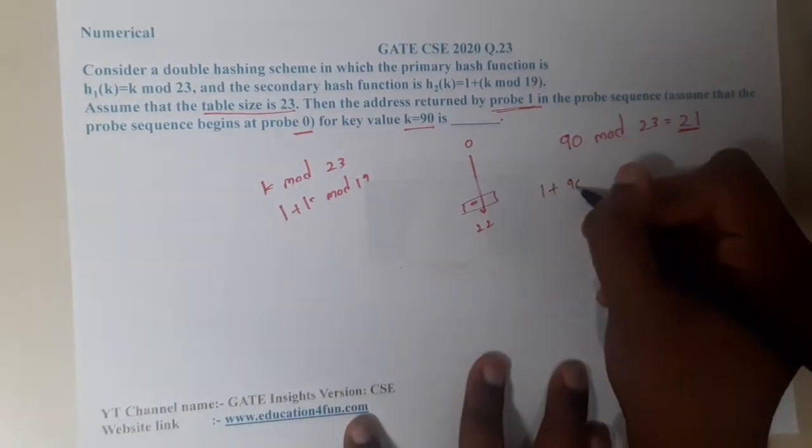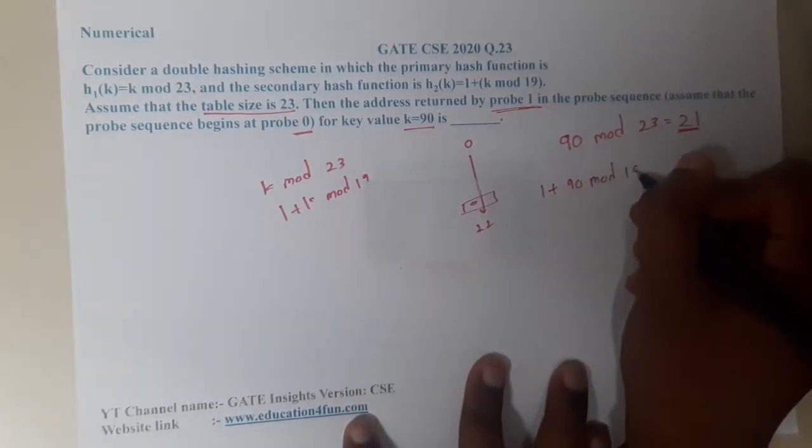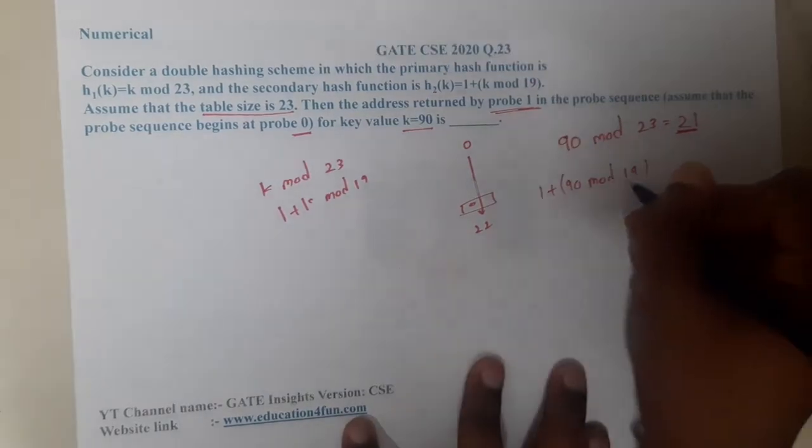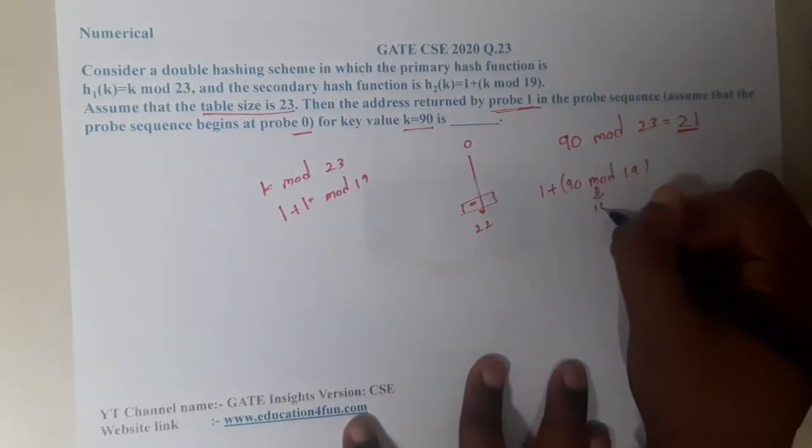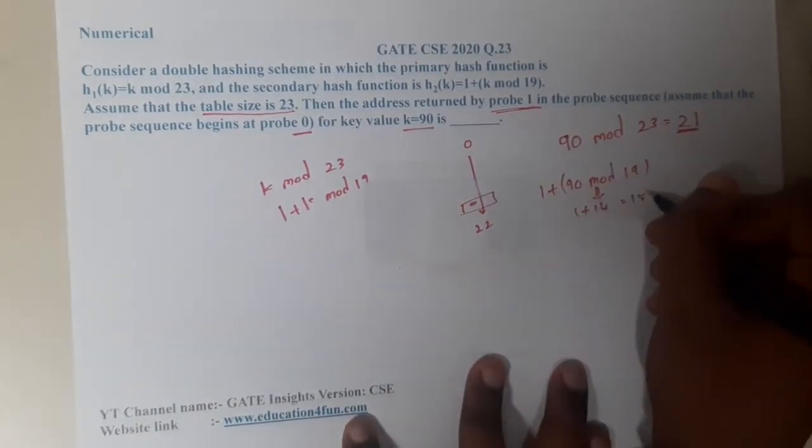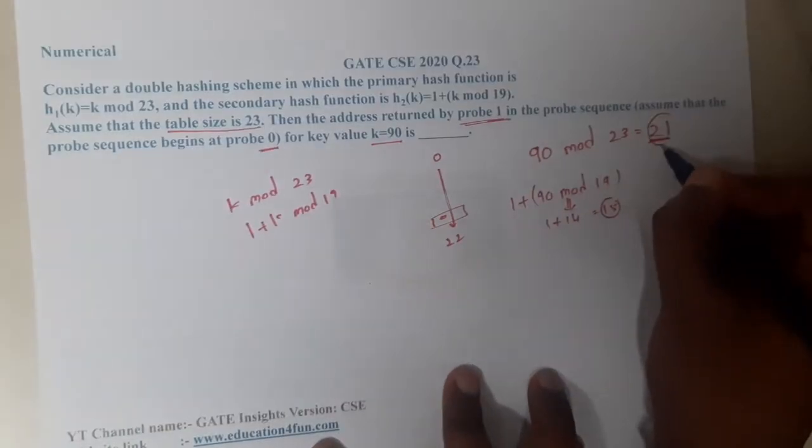What is the next equation? That is nothing but 1 + 90 mod 19. For this, what will be the value? This value is 14. So 14 + 1 = 15. Here we got 15 and here we got 21.